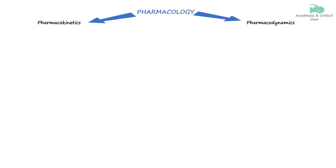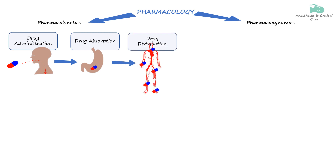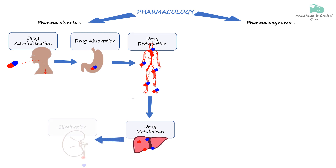When we give a drug to a patient, several things happen to the drug. These include how the drug is absorbed from the site of administration, how it is distributed from the blood to other parts of the body, how it is metabolized, and finally how it is eliminated. Together we call these processes pharmacokinetics.